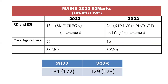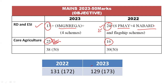Now let's see the kind of questions asked in mains as well. The mains objective section is of 50 marks. Out of these 50 marks, 13 questions were from current affairs in rural development and ESI, and 25 marks were from agriculture. So 50% of the weightage in the mains objective section was from agriculture. Very limited questions came from static portions, and those too were from major schemes like NREGA, Pradhan Mantri Awas Yojana, and NABARD itself.